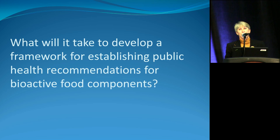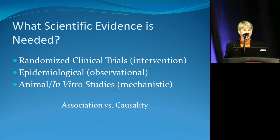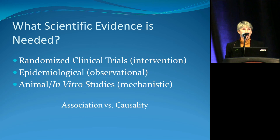So we want to know what would go into establishing a framework — if we want to make a public health recommendation for these components, what would that look like? First of all, we need scientific evidence. We always look to the gold standard of randomized intervention trials that give you causality, but lots of times prior to that we've looked at observational data. And if we want to look at mechanisms, then we've used animal and in vitro studies. So all three of these are very critical elements of evidence.